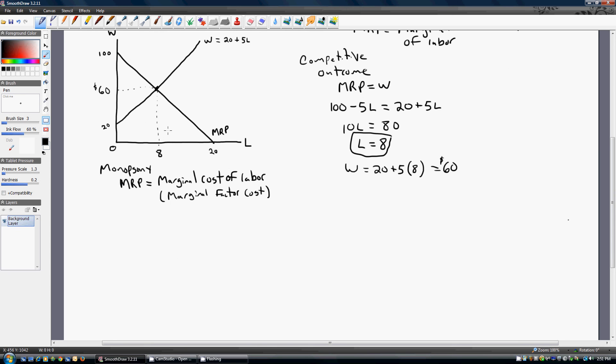Let me go down here a little bit. From the firm's perspective, the total cost of labor, TC subscript L, the total cost of labor, is simply the wage times the number of workers.